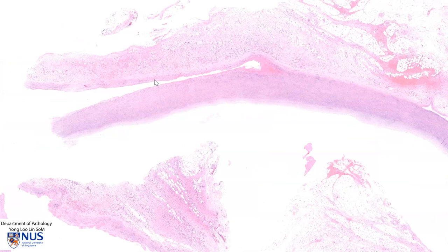What can happen to this aortic dissection? If the patient is very fortunate, the hematoma can actually track back through another tear in the tunica intima distally and re-enter the lumen of the aorta. This is fortunate because it would avoid massive bleeding.